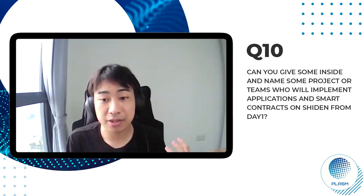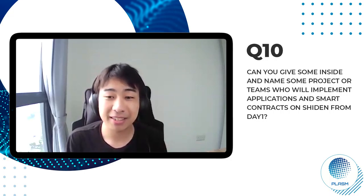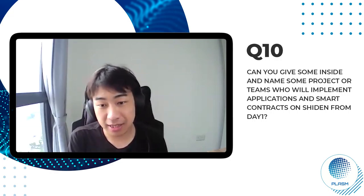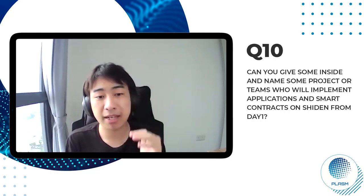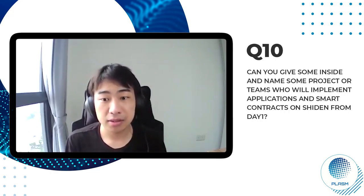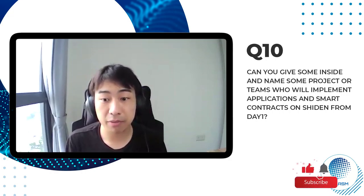Why would they choose Shiden? It will be very easy because they can make money by making smart contracts. On the other hand, if you deploy something on Ethereum, you have to pay gas, and gas costs are very expensive — you lose money. In the case of Shiden, you have to pay gas too, but you get block rewards based on your performance, and your reward should be much higher than the gas. So there's nothing to lose. I think we can attract a lot of developers and projects from day one.